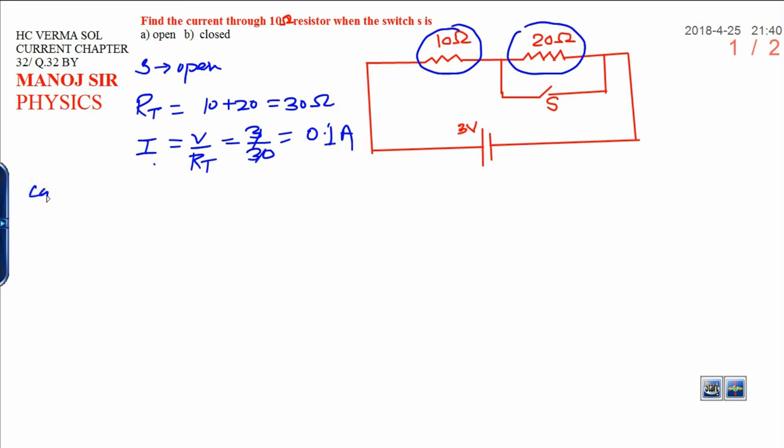Similarly, in case 2, when switch is closed, means to say when you close the switch over here, then current has two paths to flow over here.